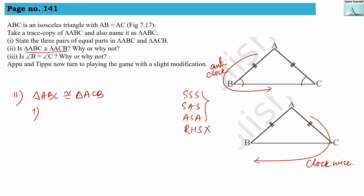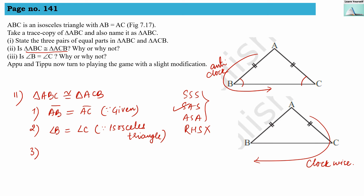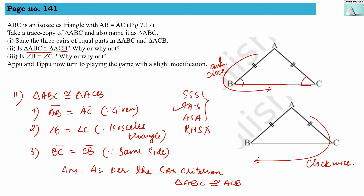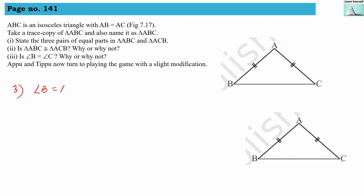We use the SAS (Side-Angle-Side) criteria. First side: AB equals AC, as given in the question. Angle: angle B equals angle C, because the triangle is isosceles. Second side: BC equals CB, as it is a common side. Therefore, by SAS congruence criteria, triangle ABC is congruent to triangle ACB.